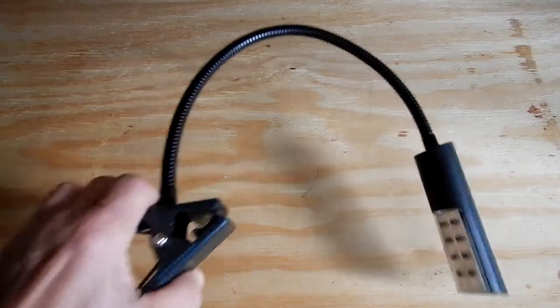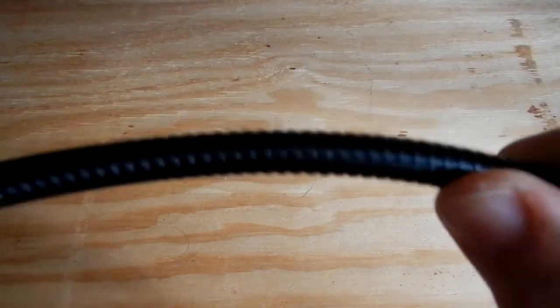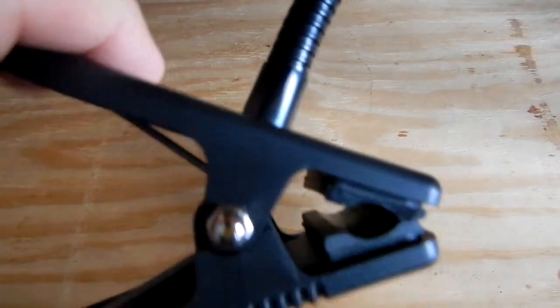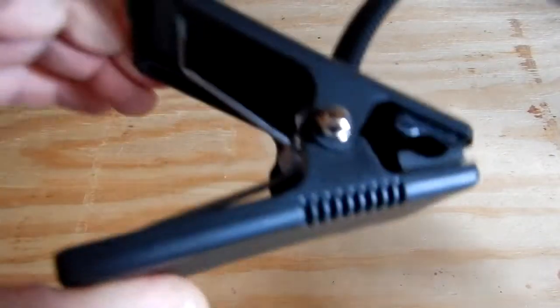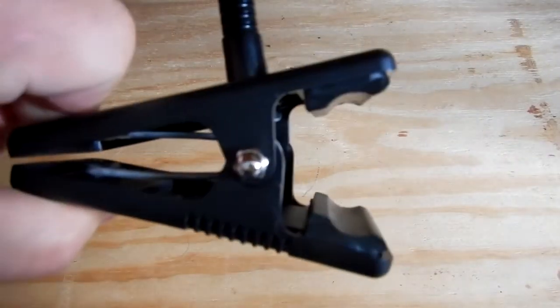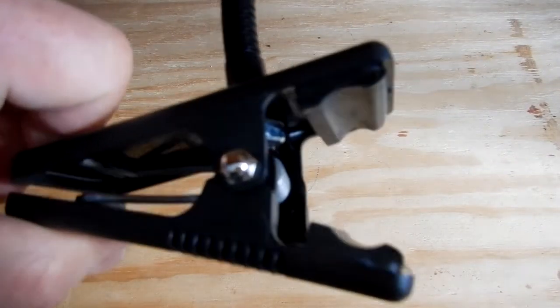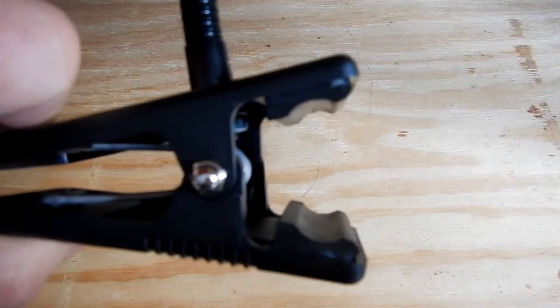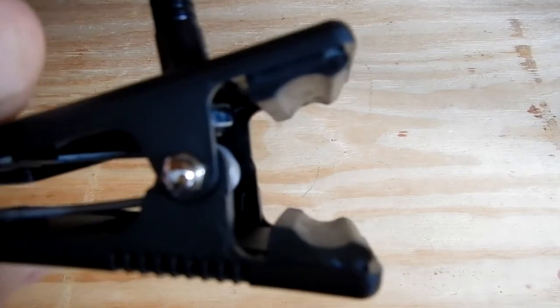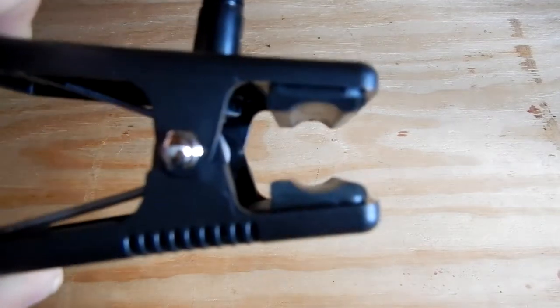Got a nice flexible gooseneck and it is metal, it's not made out of plastic. And if we look at the clamp, got a spring type clamp. It's got nice rubber grippers in there that have a radius in them for gripping onto round stock.